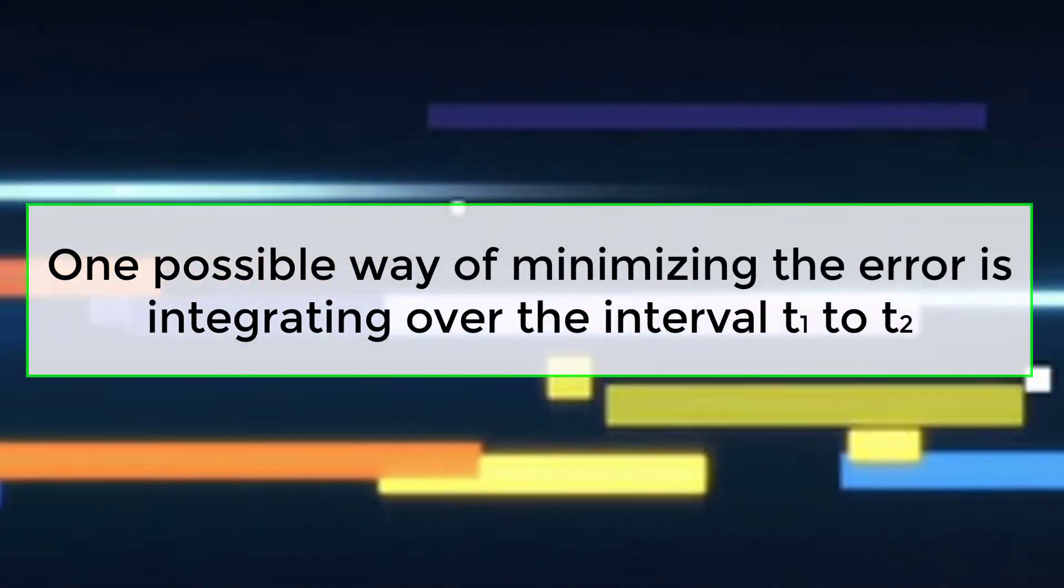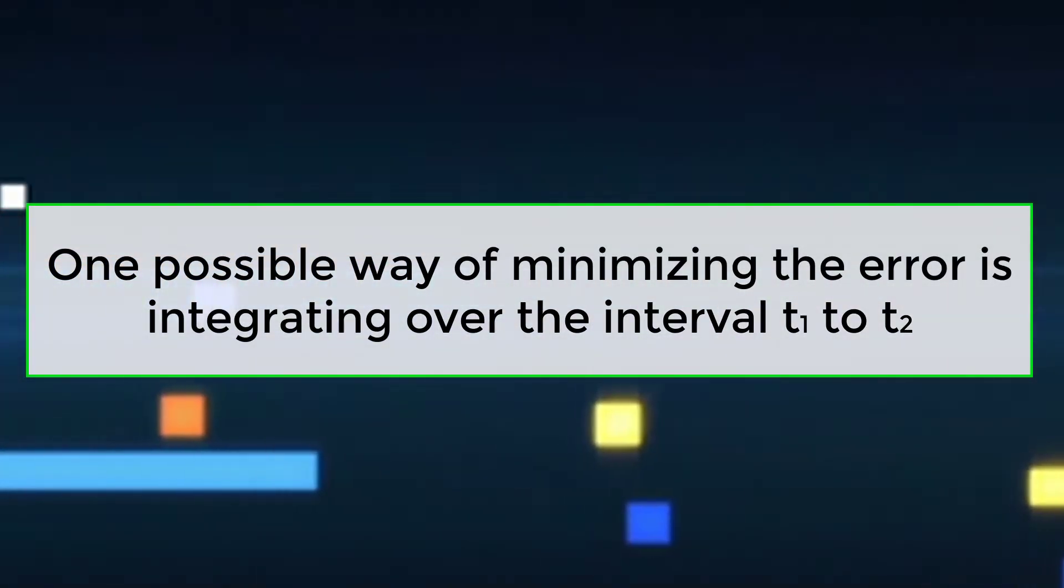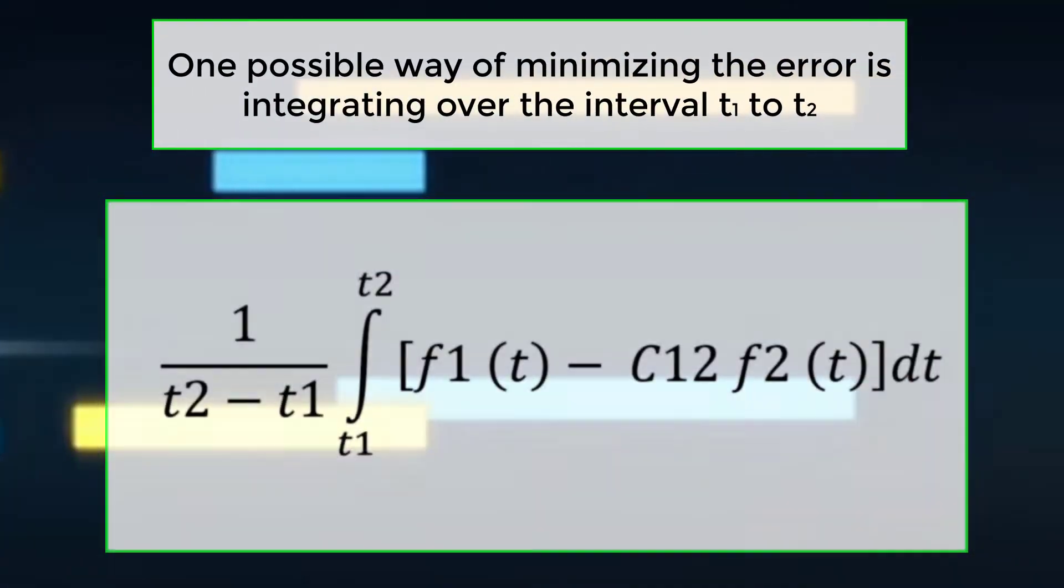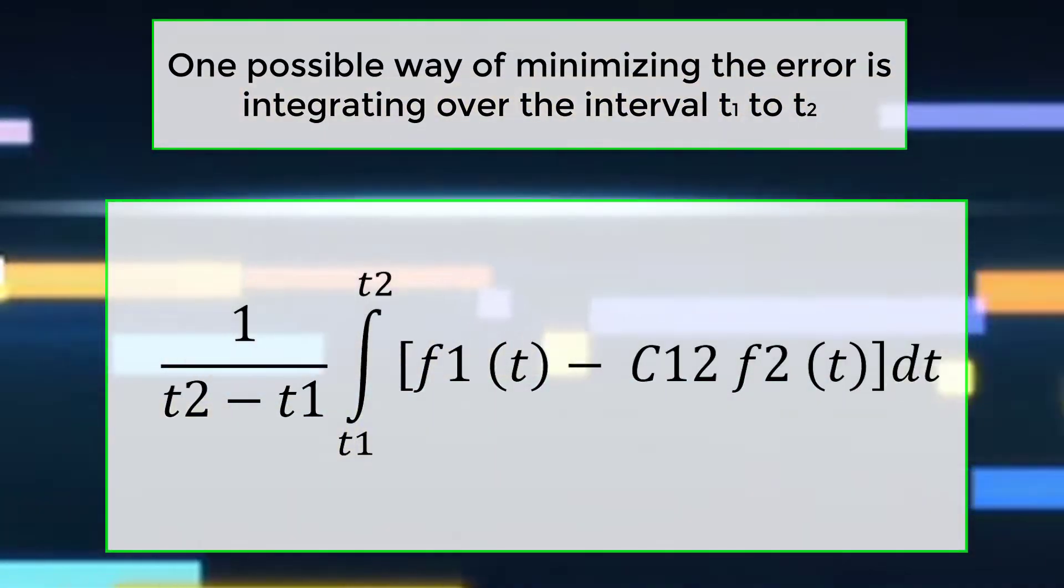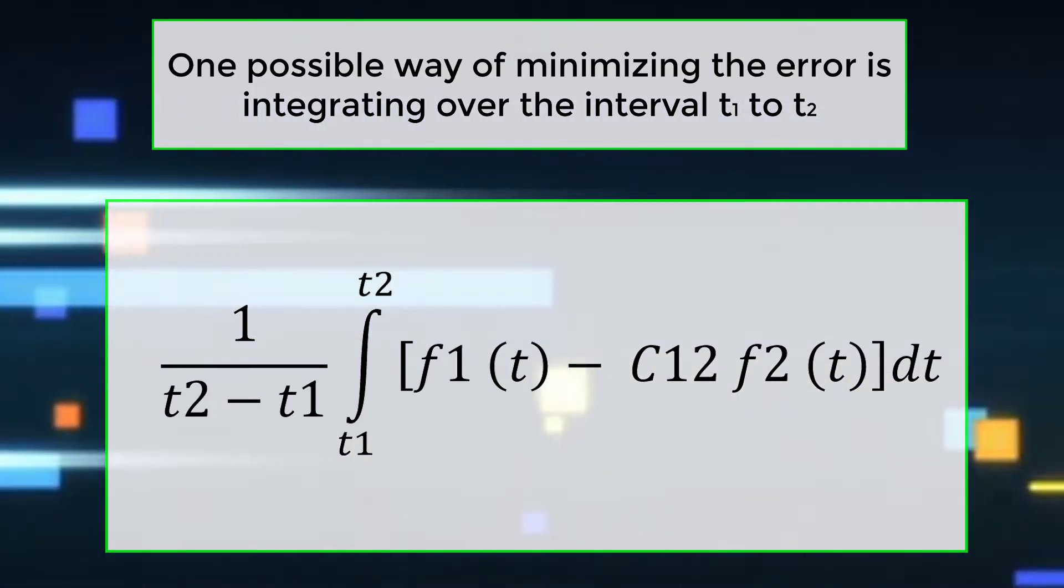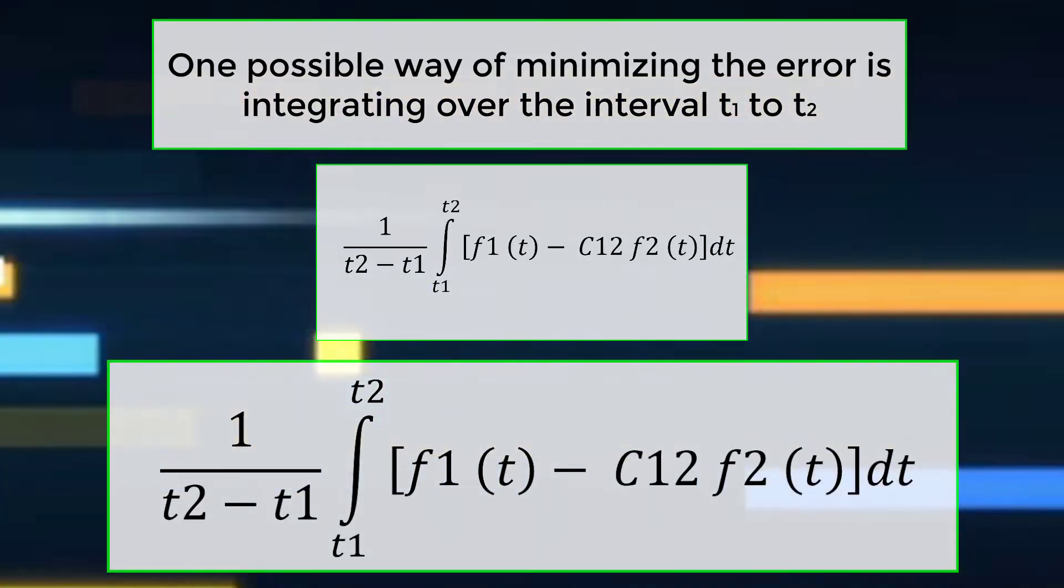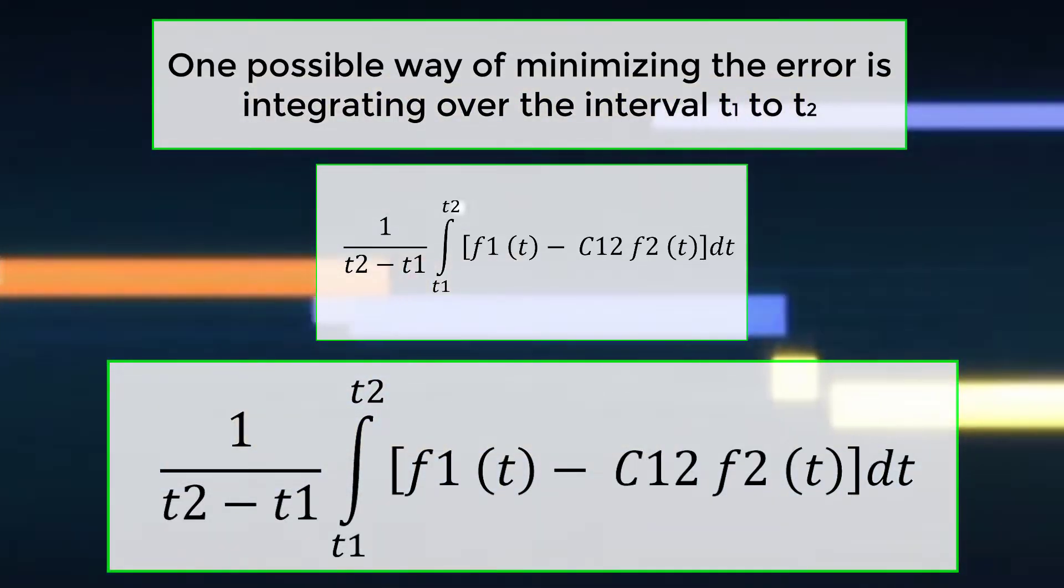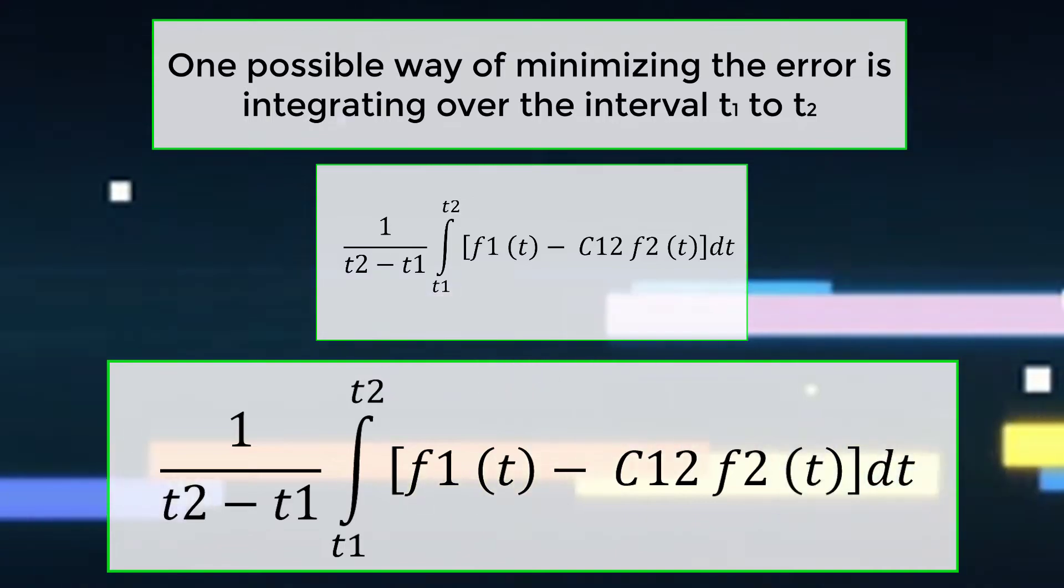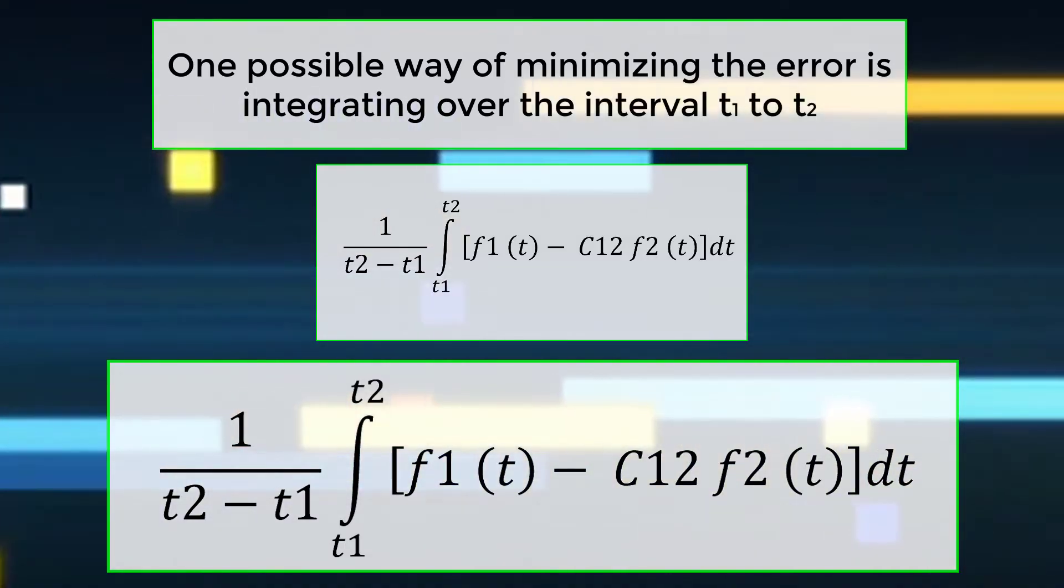One possible way of minimizing the error is integrating over the interval t1 to t2: 1 by t2 minus t1 into integral t1 to t2 of fe(t) dt, which equals 1 by t2 minus t1 into integral t1 to t2 of [f1(t) minus C12 into f2(t)] dt.